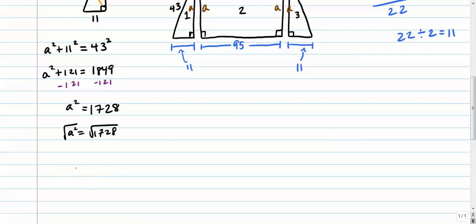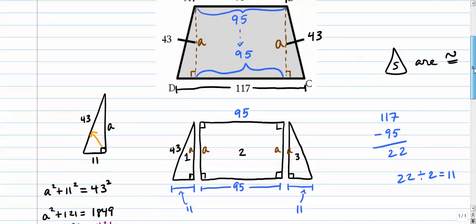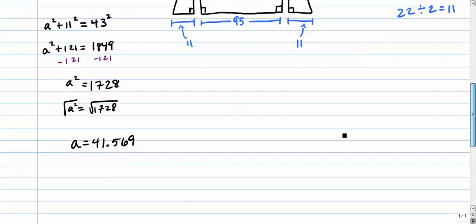So our answer altitude is 41.569. That's how high our trapezoid is. And we don't have a unit on that. So we don't really worry too much about it. We'll just literally write the word units.